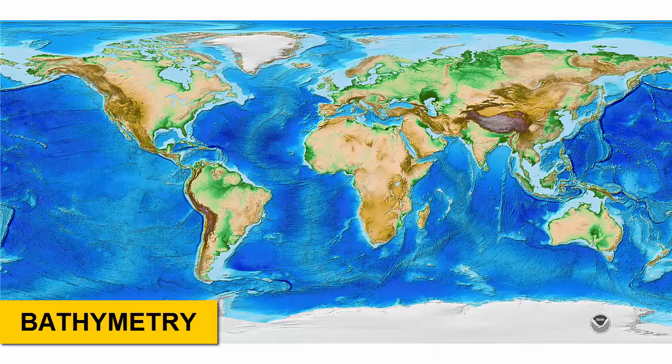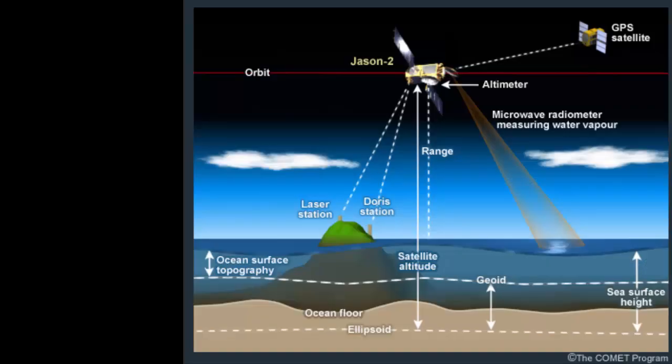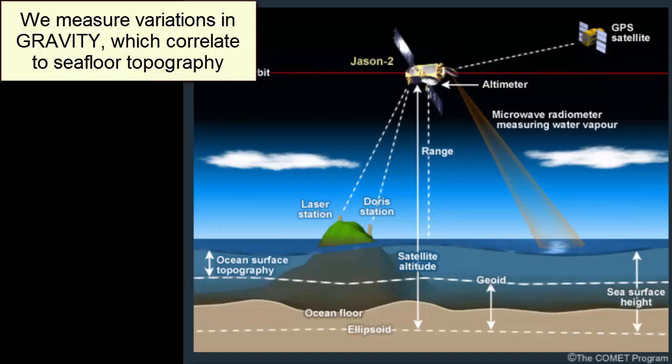Bathymetry is the term we use to describe the vertical relief present on the floor that underlies a body of water. Topography is the term we use to describe vertical relief on land. Satellites cannot determine seafloor bathymetry remotely because of the overlying seawater. However, indirectly we can approximate bathymetry of the seafloor by using satellites to measure the strength of gravity, which can then be correlated directly to seafloor high and low elevations or depths.